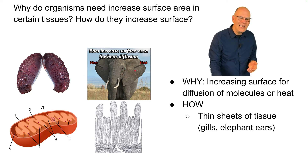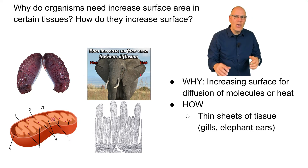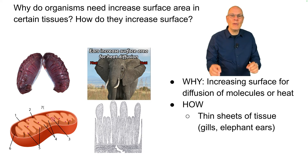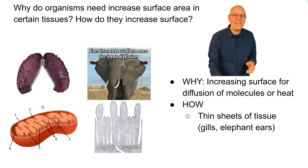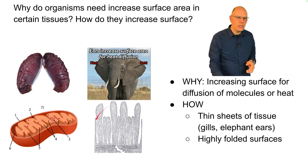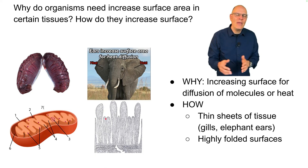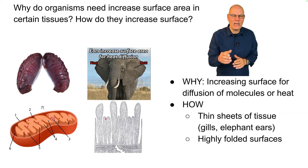Or if you think about the ears of elephants, those are big flat sheets of tissue that enable the elephant — which has very little surface area relative to its volume and lives in a hot place — to get heat out of its body. You can also have highly folded surfaces, like the internal membrane of the mitochondria or the structures called villi that make up your intestine. There are actually folds within folds.